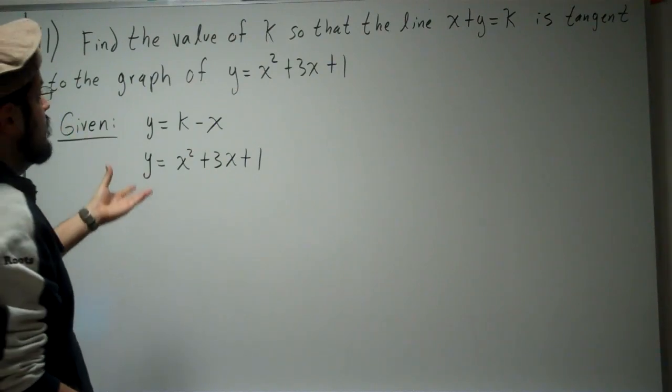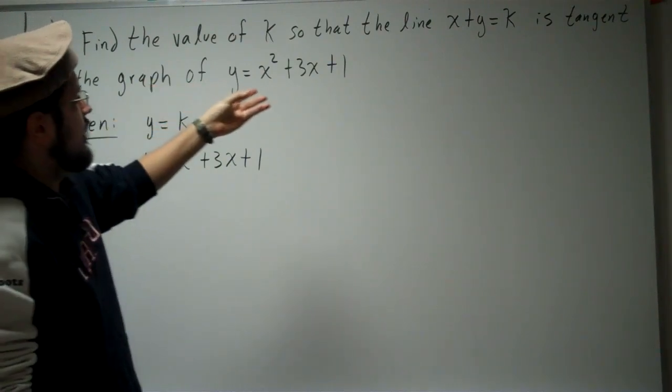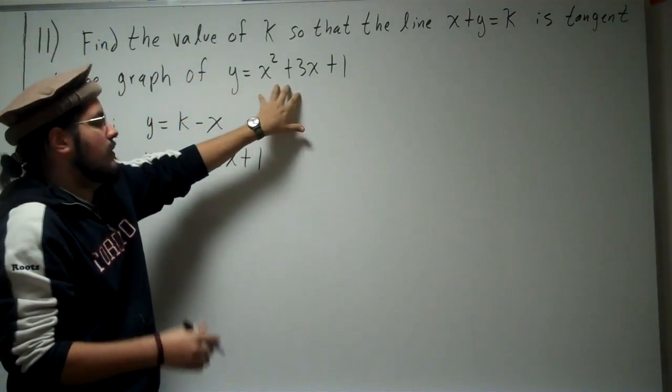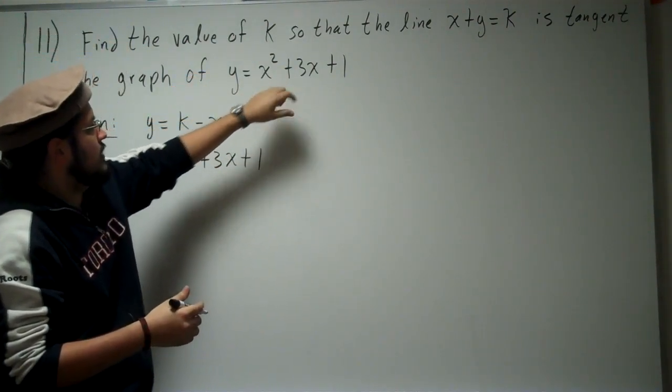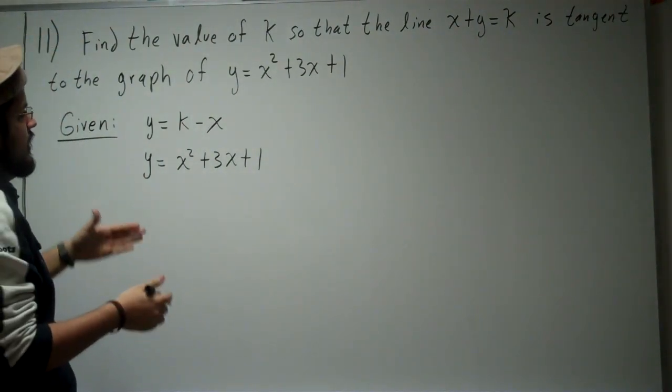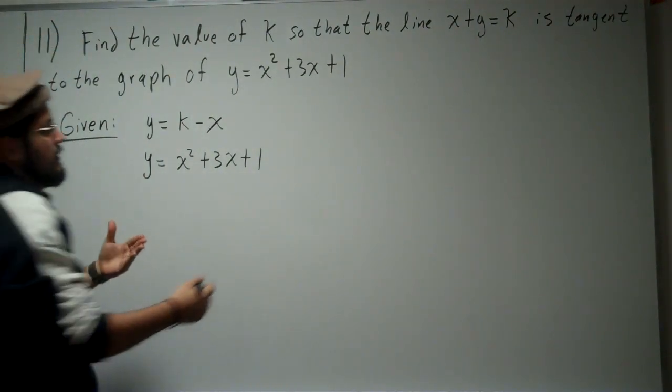What do they want? They want us to find the value of k so that this line is tangent to this polynomial. In order for those two to be tangent, their derivatives must be the same, right?